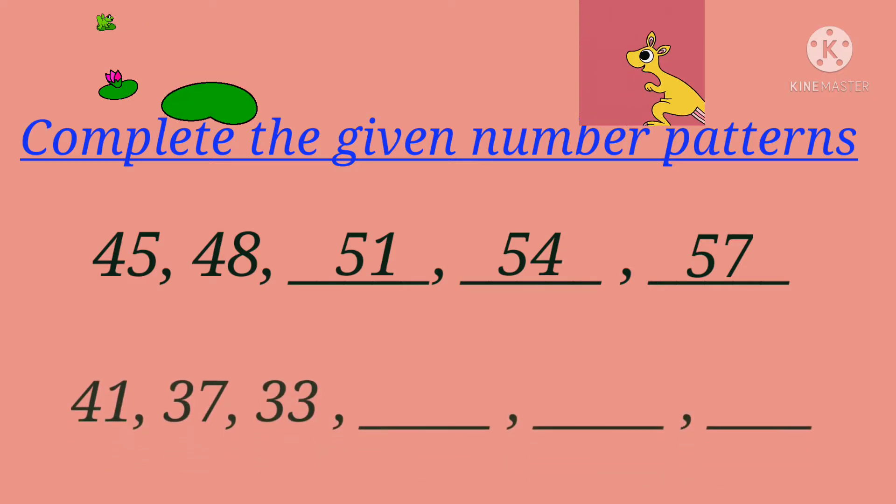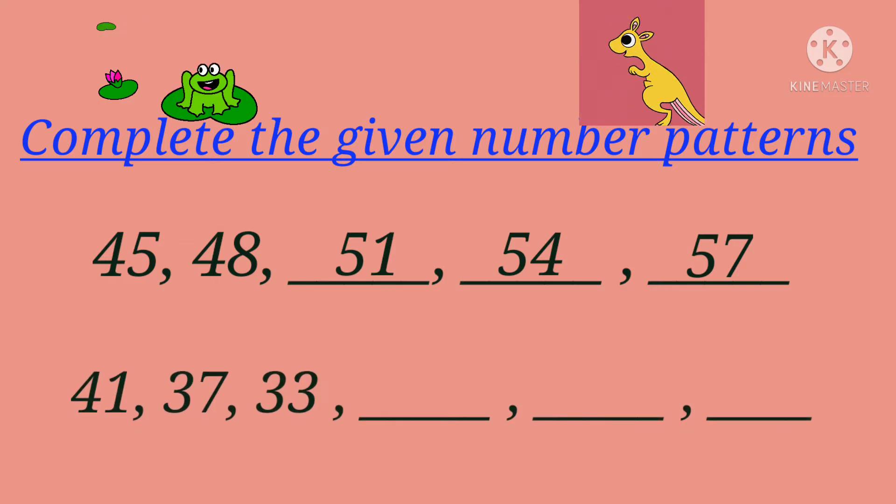Now here our second pattern is 41, 37, 33, and then we have to fill in the next three numbers. Now this is very clear that this is a backward counting. So here we will start counting backward from 41. Start counting backward now: 40, 39, 38, 37. So here we have to count backward till four numbers.